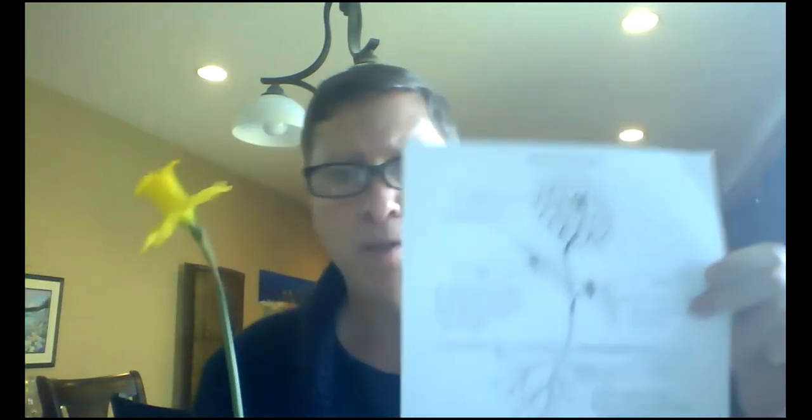This one here I've got is of course a yellow daffodil from my own garden and we're going to be learning about the parts of a flower. I know you have a worksheet in your package called parts of a plant.